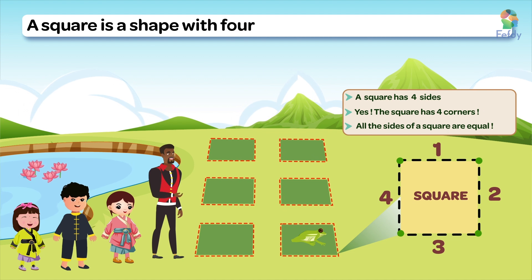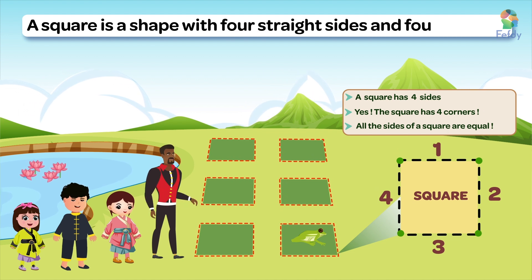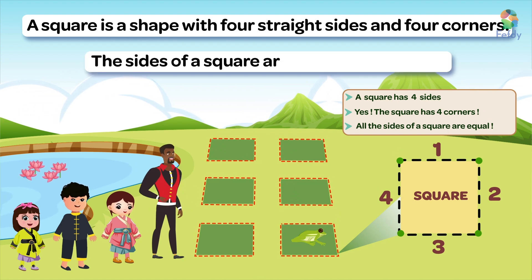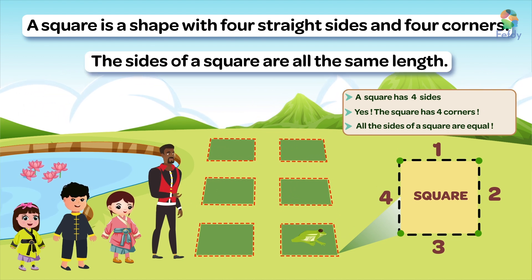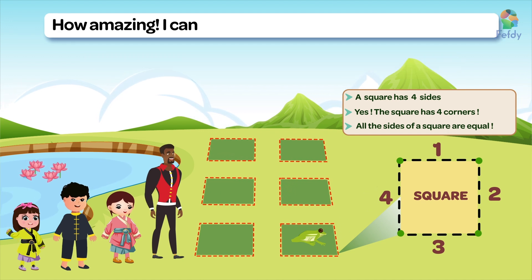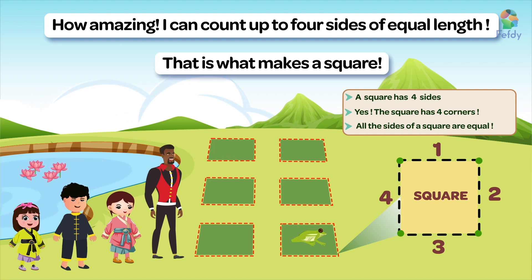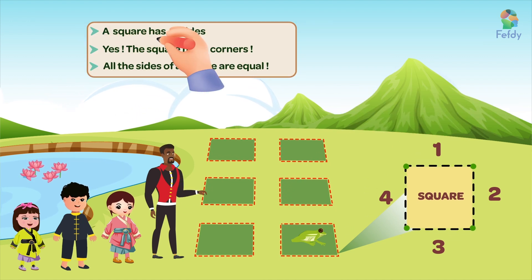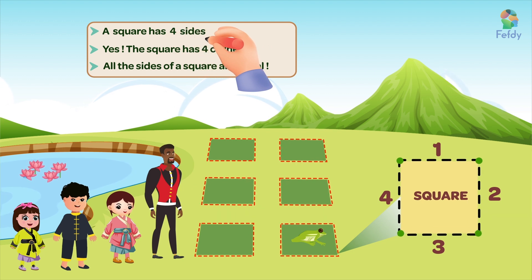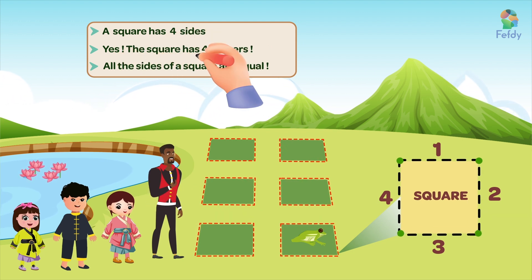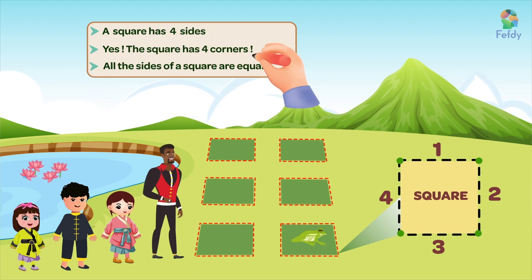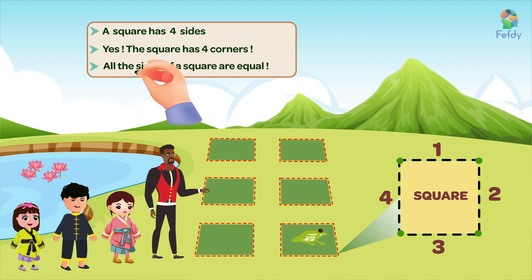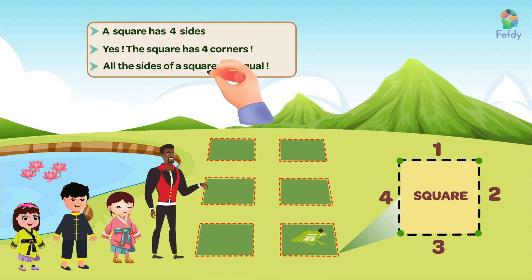A square is a shape with four straight sides and four corners, and all the sides are the same length. I can count up to four sides of equal length — that is what makes a square. A square has four sides and four corners, and all the sides of a square are equal.